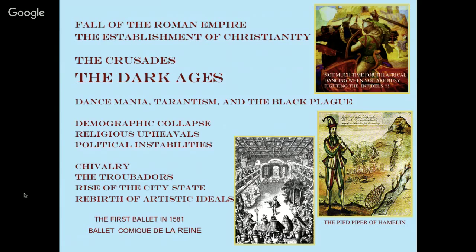Then Dionysian energies shook up what had been very ordered between the Greeks and the Romans. The fall of the Roman Empire came, and Christianity began to be established and codified. During this period there was a lot of Dionysian-type dancing — dance mania — where people would dance all night. Some believed that if they danced all night they could sweat out the plague. Tarantism was a dance associated with a spider bite; historians wonder if it was the spider's poison making people move chaotically, or a replication of that idea.